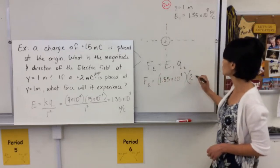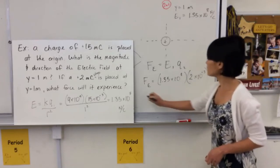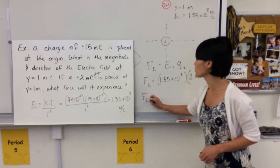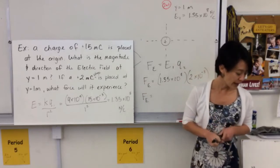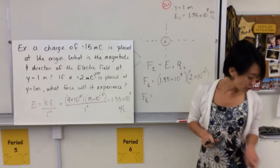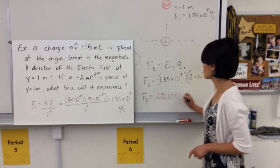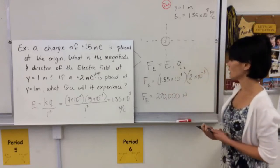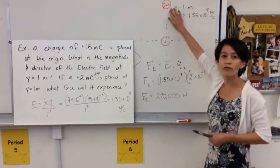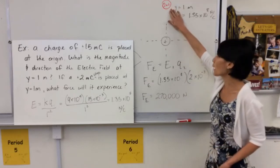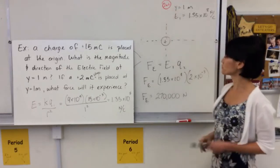And the charge I put there is 2 millicoulombs. So 2 times 10 to the negative 3. And so let's go ahead and calculate out what that force is. It's going to be a pretty big force. It's going to be a pretty big interaction there. And the force you get should be 270,000 newtons. So this is going to feel a force of 270,000 newtons. So it's going to be positive and positive. So it's going to be repelled from it.